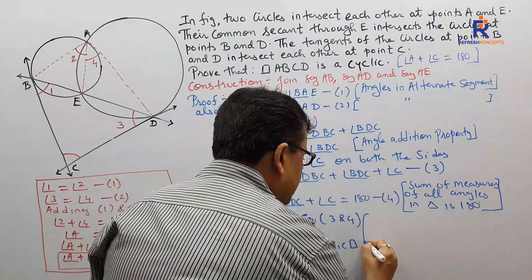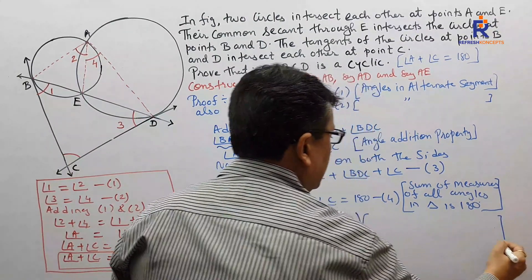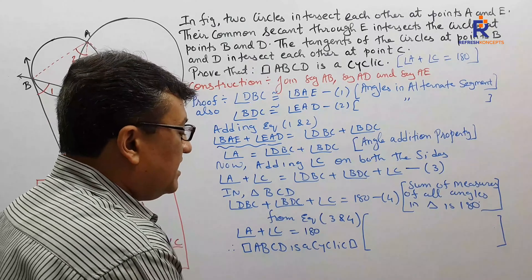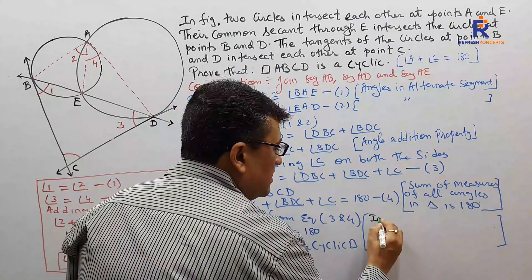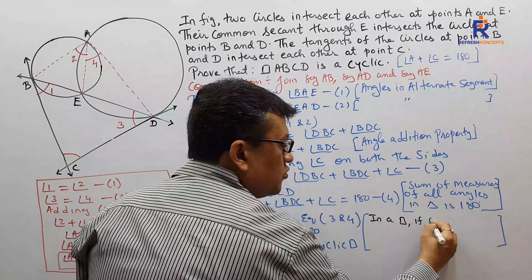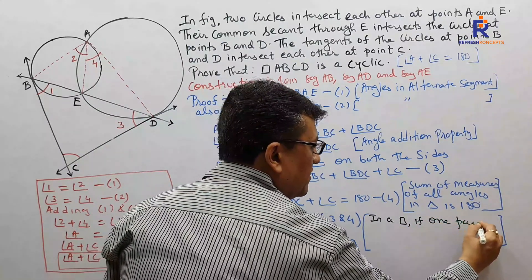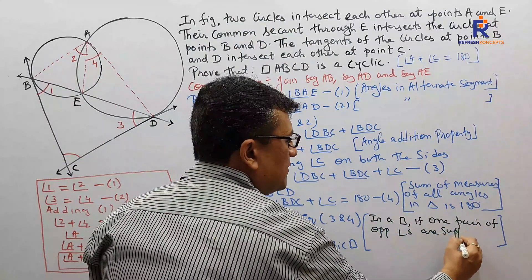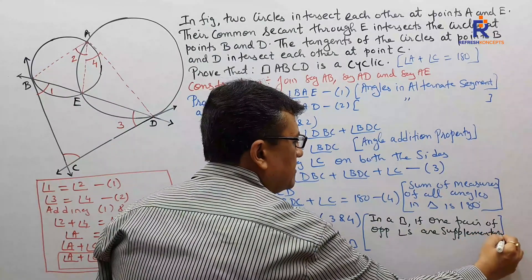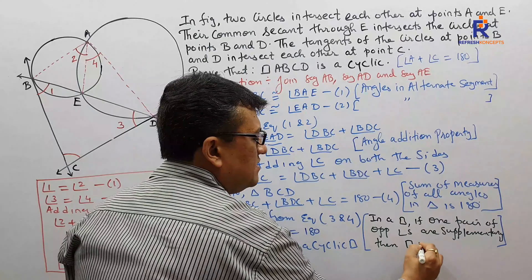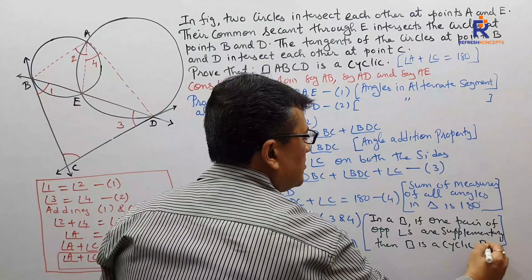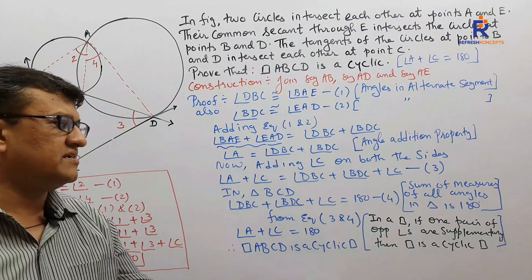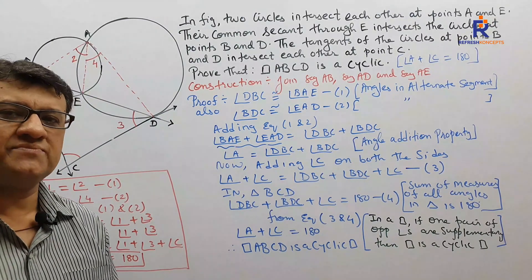Therefore, quadrilateral ABCD is a cyclic quadrilateral. I'm writing this reason with a different marker so you can understand it. The reason is: if in a quadrilateral one pair of opposite angles are supplementary, then the quadrilateral is a cyclic quadrilateral. Do we have one pair of opposite angles supplementary? Indeed yes. Therefore the quadrilateral is a cyclic quadrilateral.